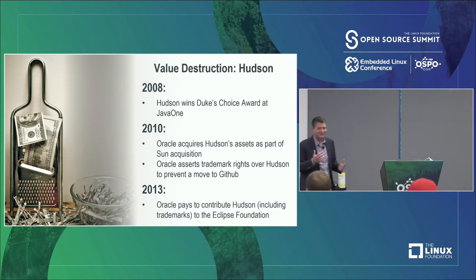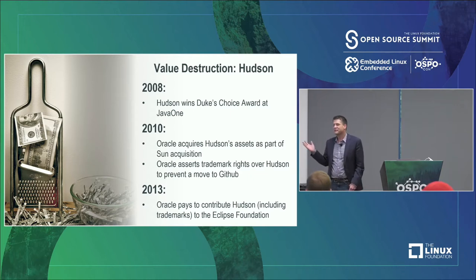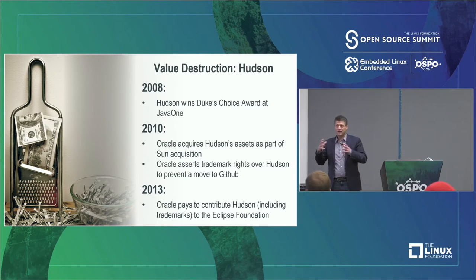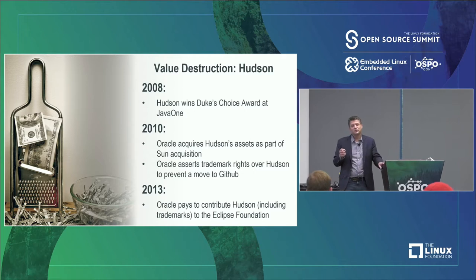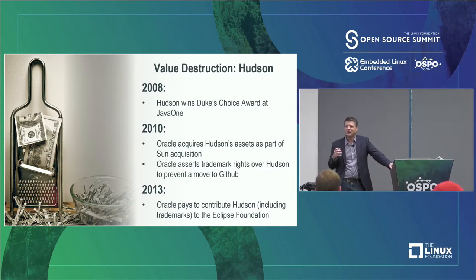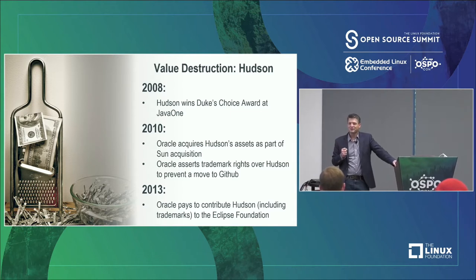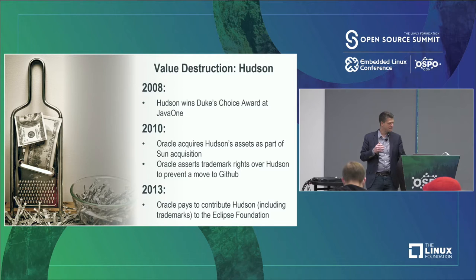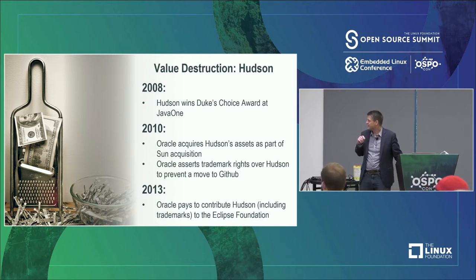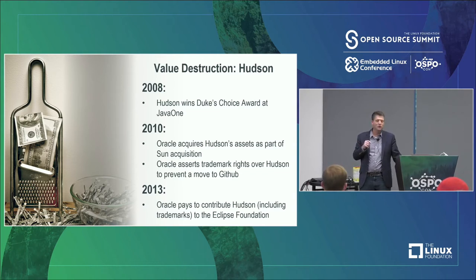Oracle also — 2010 was really a banner year for them. If you're familiar with Hudson: Hudson won Best of Show in 2008, it was up and coming, it had surpassed CruiseControl, and it was the largest continuous integration project ever across the entire ecosystem. There were some issues with the Java.net servers and the community said they'd like to move to GitHub, where more of the community was. Oracle said no, and threatened to assert their trademarks. Well, by 2013 everyone moved over to Jenkins. They actually paid Eclipse to move Hudson over to Jenkins.